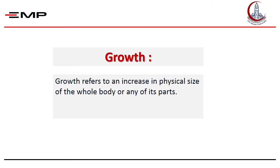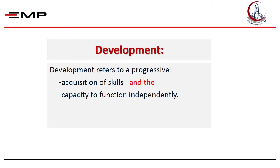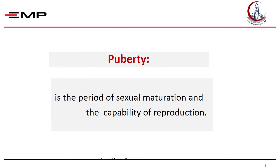Growth is defined as an increase in physical size of the whole body or any of its parts. The neonate is born with a certain weight, height, and skull circumference, and progressively gains weight, increases in length, and his or her skull grows, etc. While development is the acquisition of skills and the capacity to function independently — the child progresses from a totally dependent infant at birth to a mobile verbal person who is able to communicate with others. Puberty is the period of sexual maturation and the capability of reproduction, associated with the development of secondary sex characteristics and rapid growth. So, growth is a physical process, while development is functional and puberty is maturational.